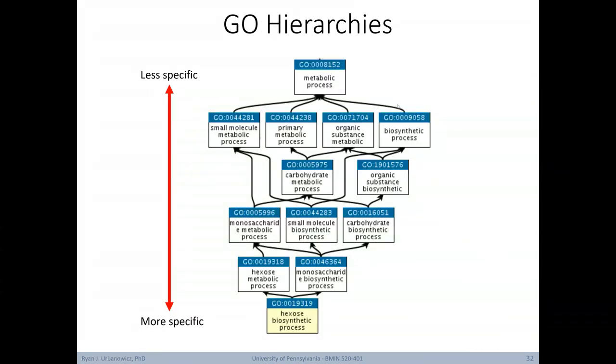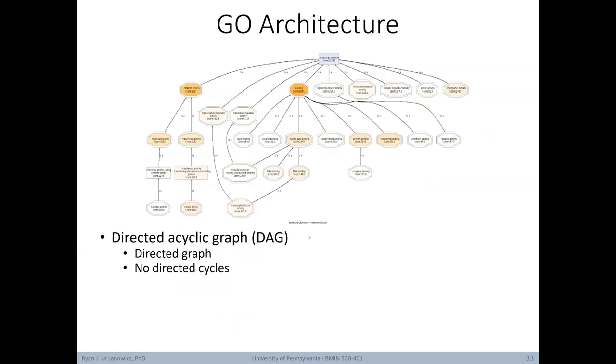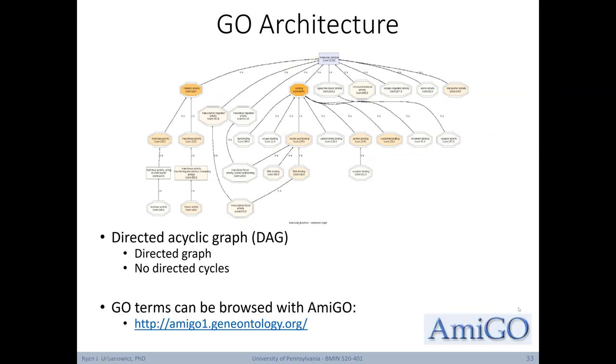The architecture of the Gene Ontology is that of a directed acyclic graph, or DAG. By a directed graph, we mean that there is a directionality between the relationships. And acyclic means that there are no directed cycles. In other words, there can be no loops going from higher in the tree to lower in the tree. Of note, there's this nice little application called Amigo that allows you to browse GO terms. Here's what the Amigo page looks like. You can search for specific GO terms, such as synaptic transmission in this example.